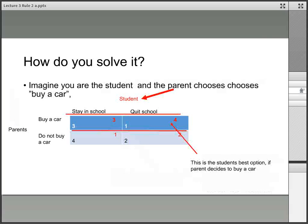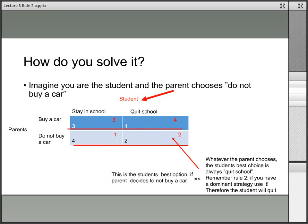Now let's look at the student. If parents buy a car, the student's options are 3 and 4, with 4 being better. If parents don't buy a car, the options are 1 and 2, with 2 being better. In both cases, the better option is to quit school. Following Rule 2, the student will play quit school.